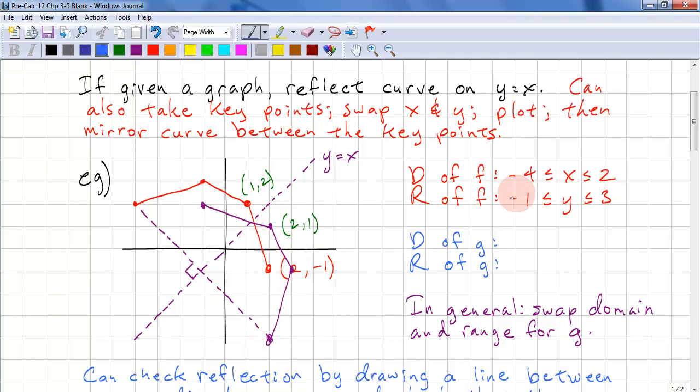Okay, the domain of f is negative 4 to 2. And the range is negative 1 to 3. All we have to do is swap the domain and range. So we have negative 1 to 3 and negative 4 to 2.